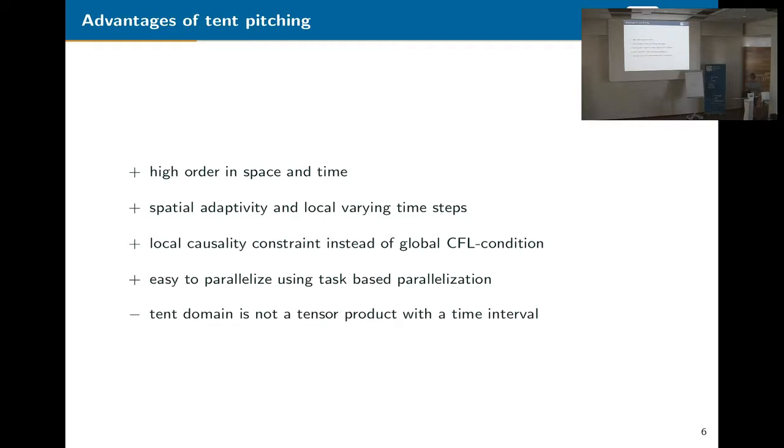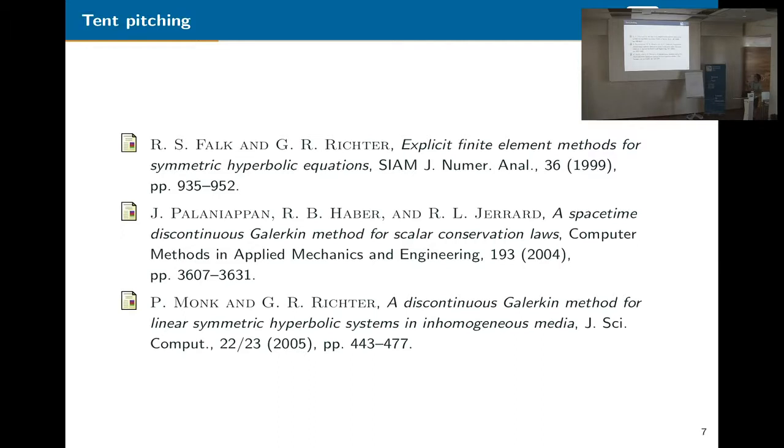One point which is not that nice, the tent itself has no tensor product structure, so the time stepping is not that easy. So one option would be to use space-time DG. There are some works on this as well, but it's quite memory consuming. So especially in 3 plus 1 dimension, the problems get quite big. So that's one point we want to change and want to fix by introducing a mapping. So here I have some references, but most of them all did space-time DG.